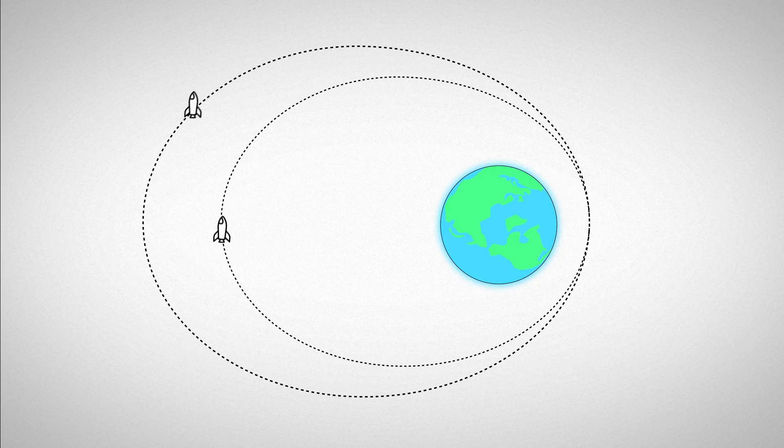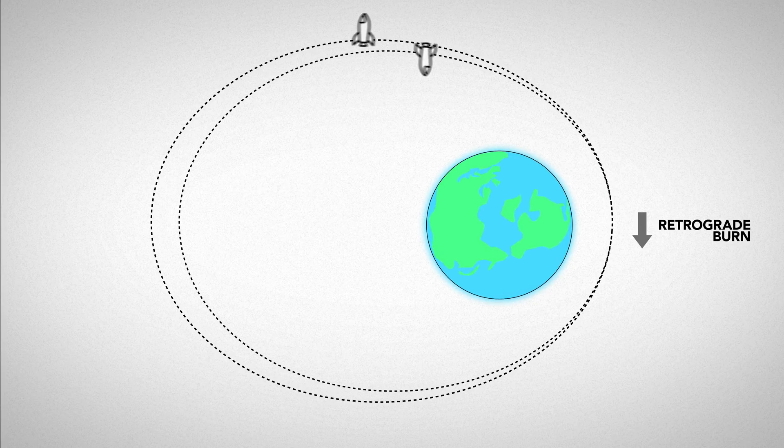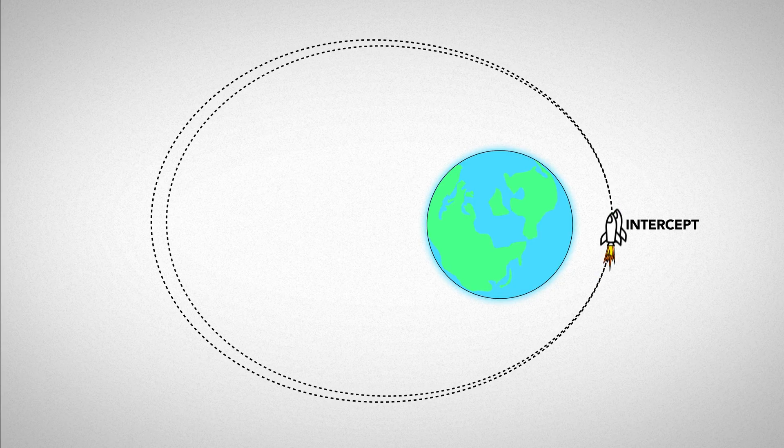So you can't actually catch up to something if you're orbiting on the same path because your velocities are fixed. Instead you can just slow down to shrink your orbit, essentially creating a shortcut to intercept your objective and then speed back up so that you stay in the same orbit.